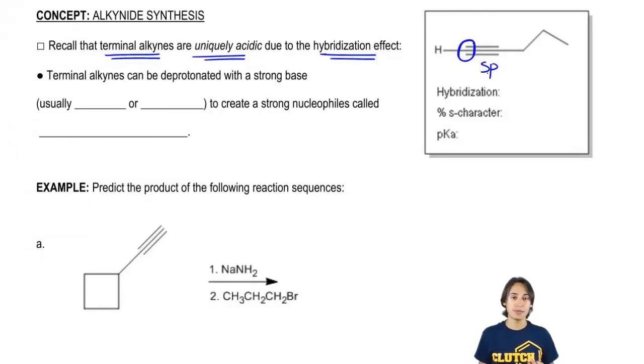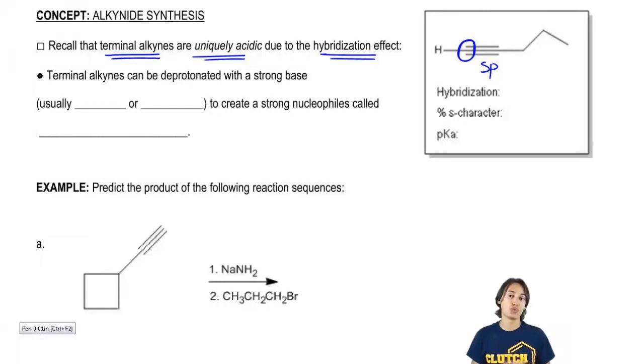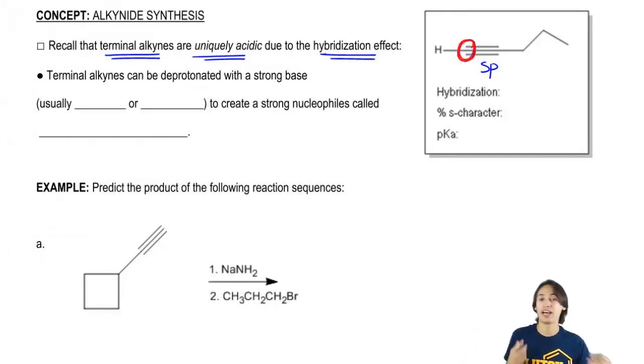The reason it's SP is because remember that the way we figured out hybridization was you count up the number of groups or what we call bond sites and that would tell you what the hybridization is. So in this case, I would just have one bond over here, a second bond over here, that's two. Two bond sites equals SP. So we know the hybridization is SP.